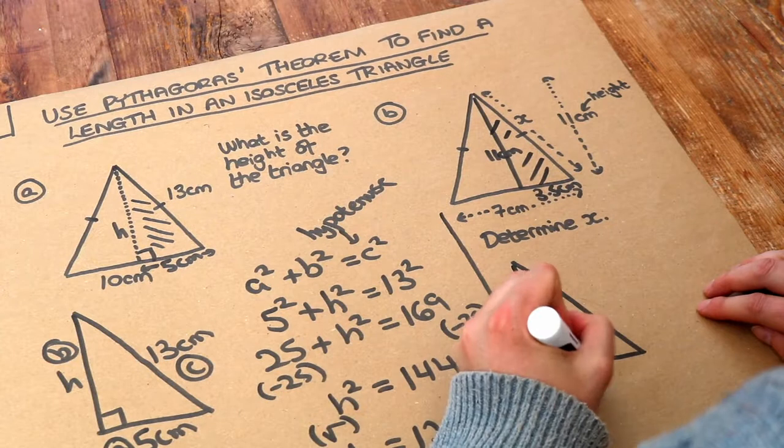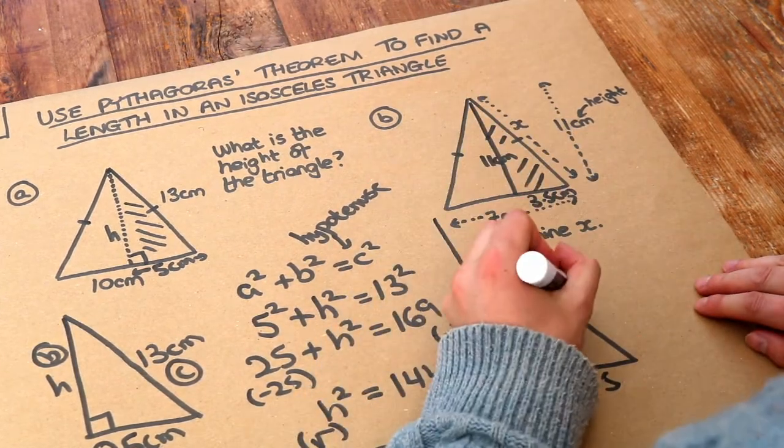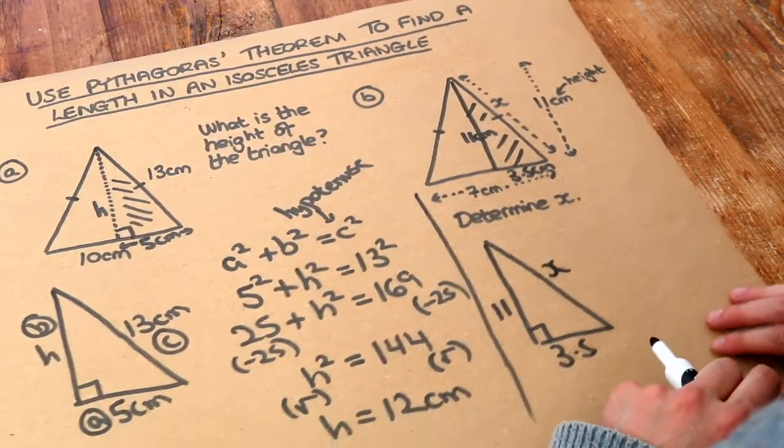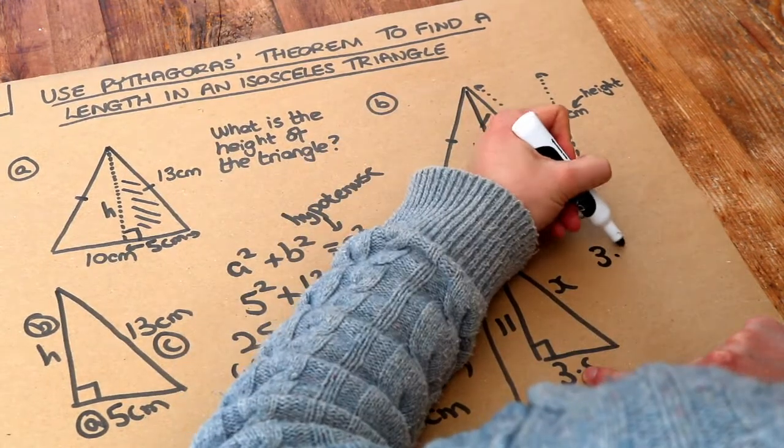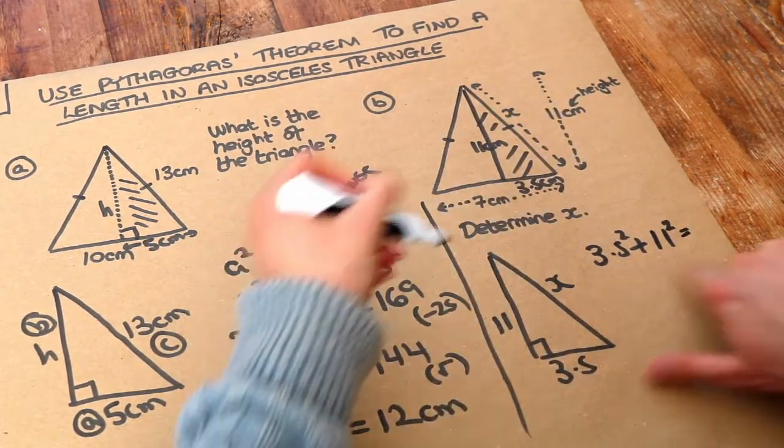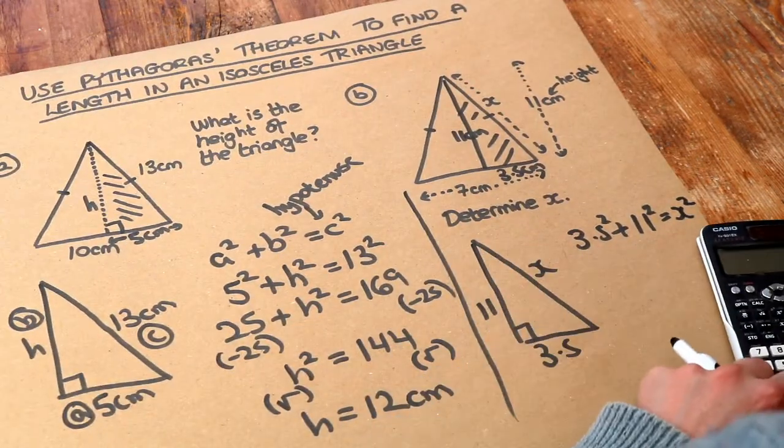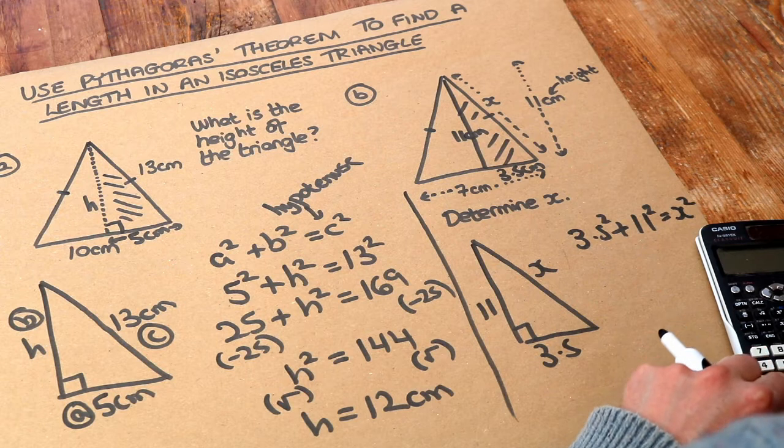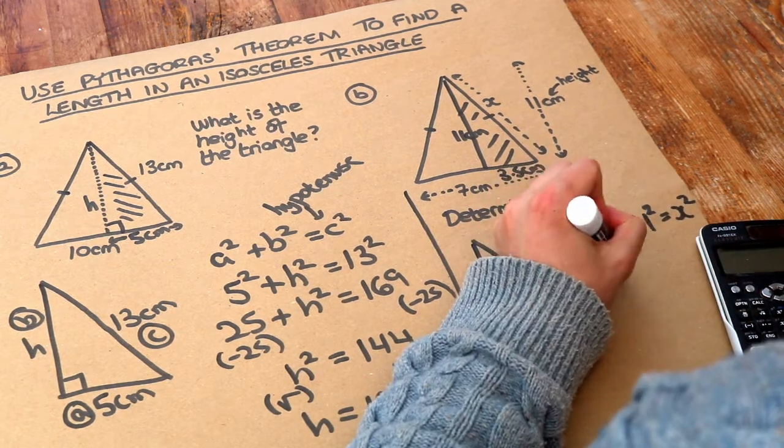Using Pythagoras theorem again, we do one shorter side squared, so 3.5² + the other shorter length squared = the hypotenuse squared. If we put the left hand side into our calculator, 3.5² + 11² = 133.25.